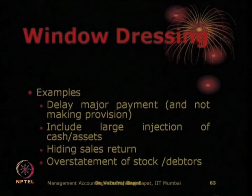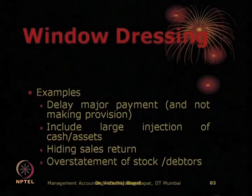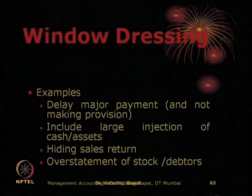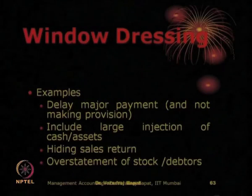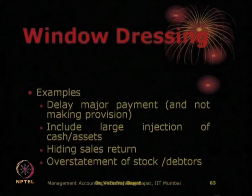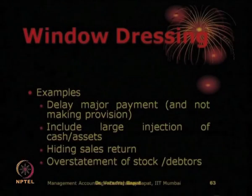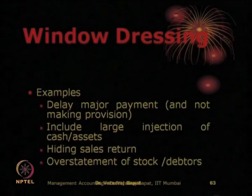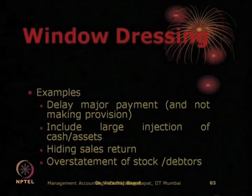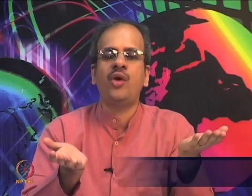How is window dressing done? Window dressing may be done by delay in major payments and not making the proper provision. It may include large cash injections, hiding of sales, and overstating of debtors. Sometimes a big liability is due — the company does not pay it nor makes a provision for it. So automatically the expenditure is understated, liabilities are understated, and you appear to have more profits and more net assets.